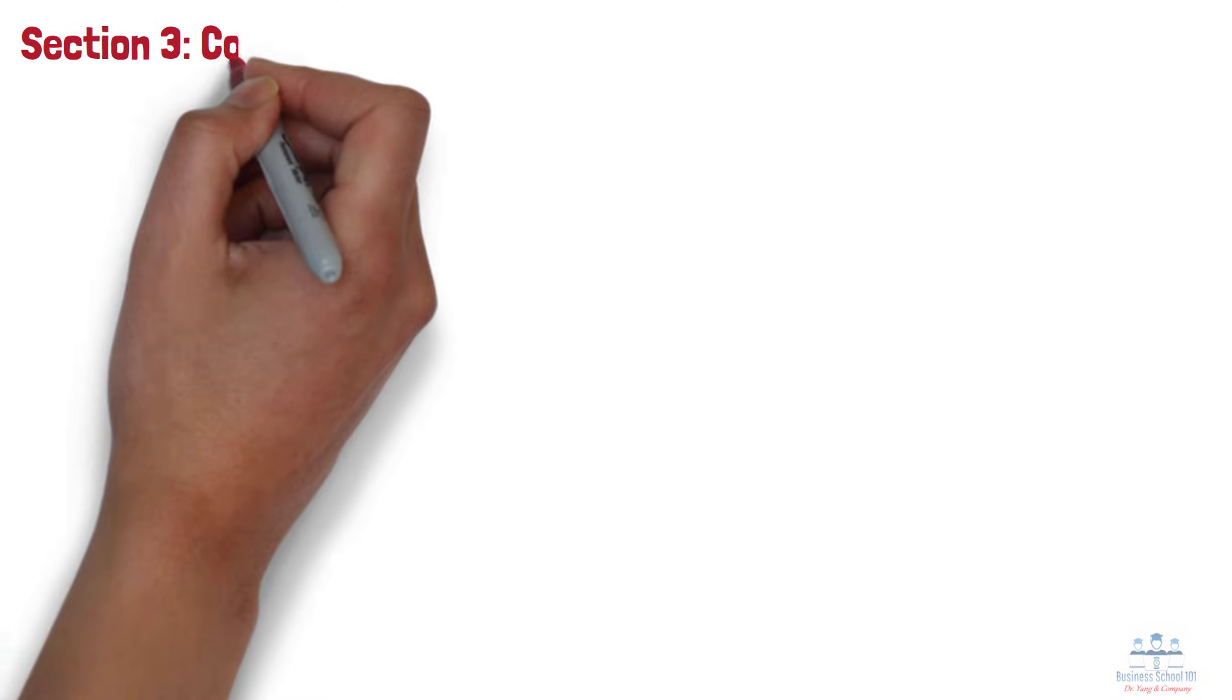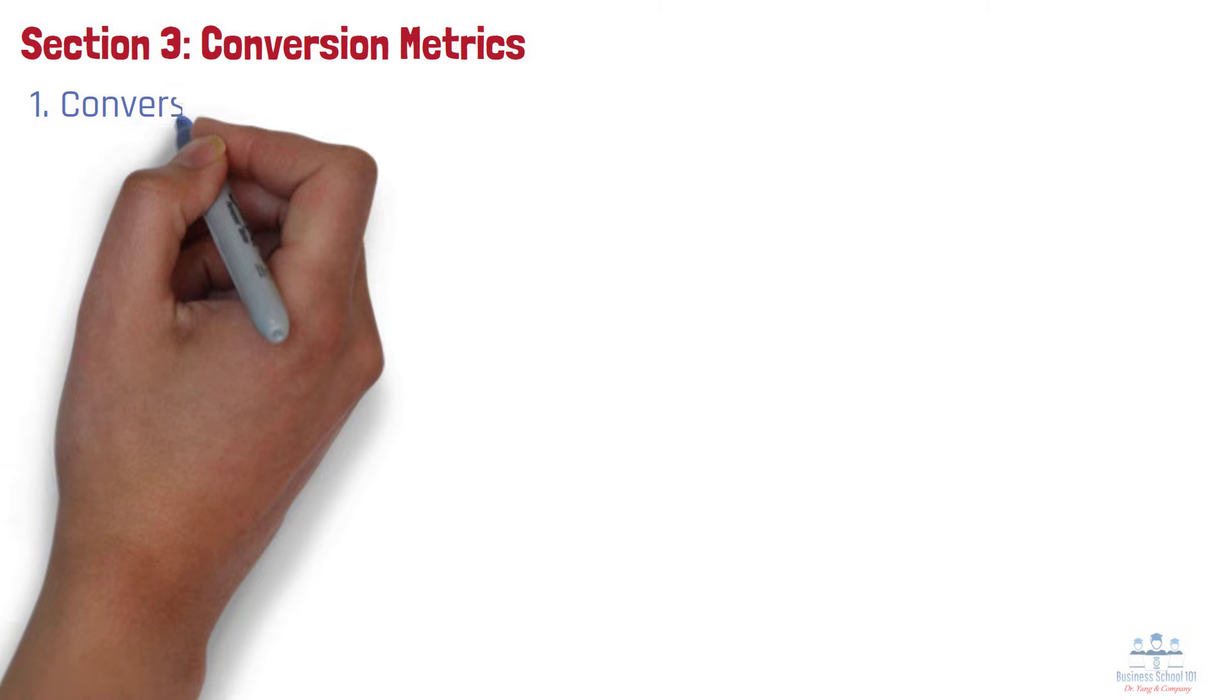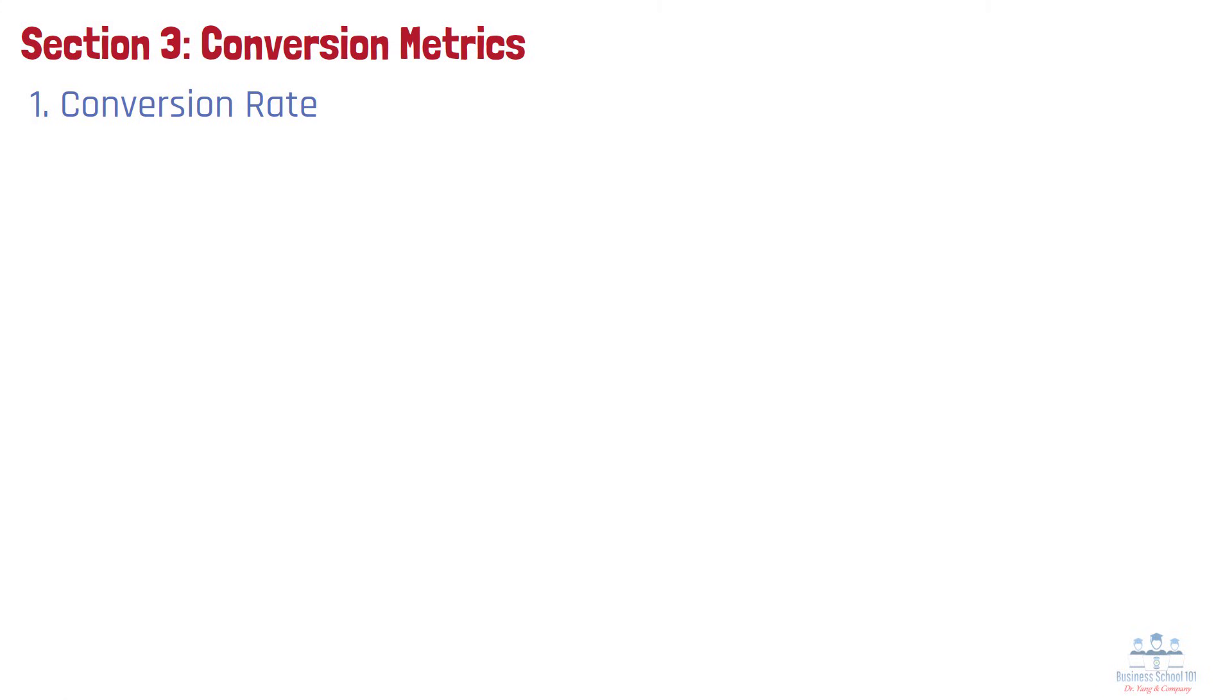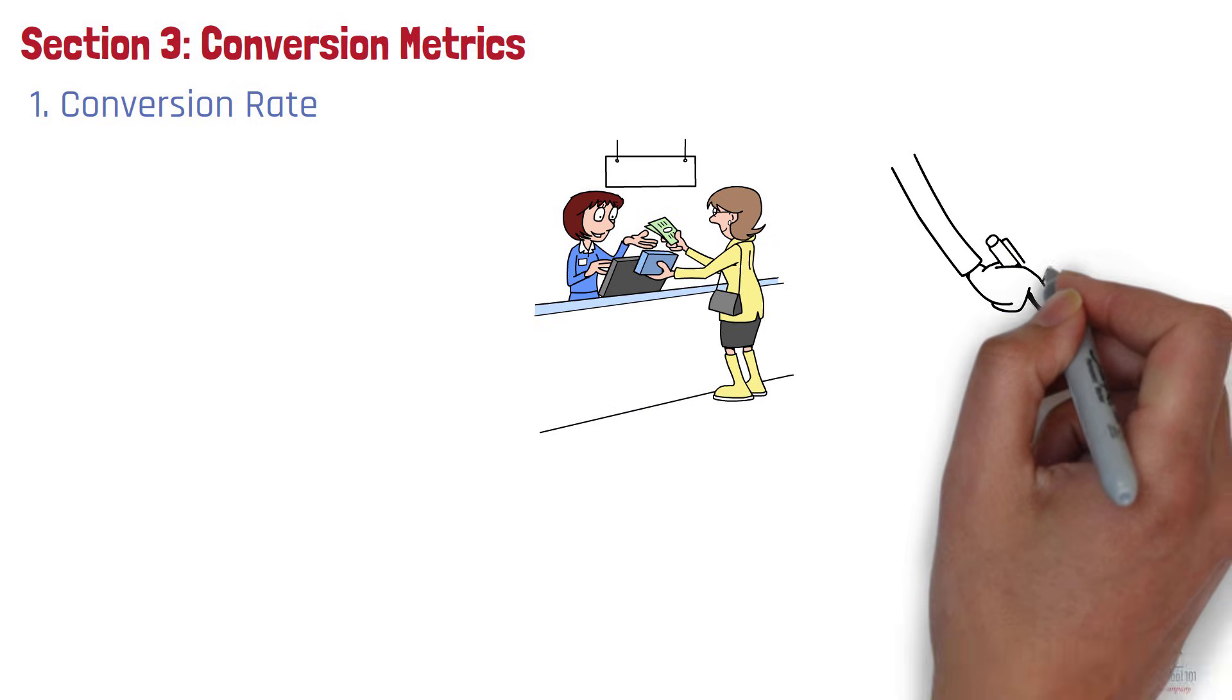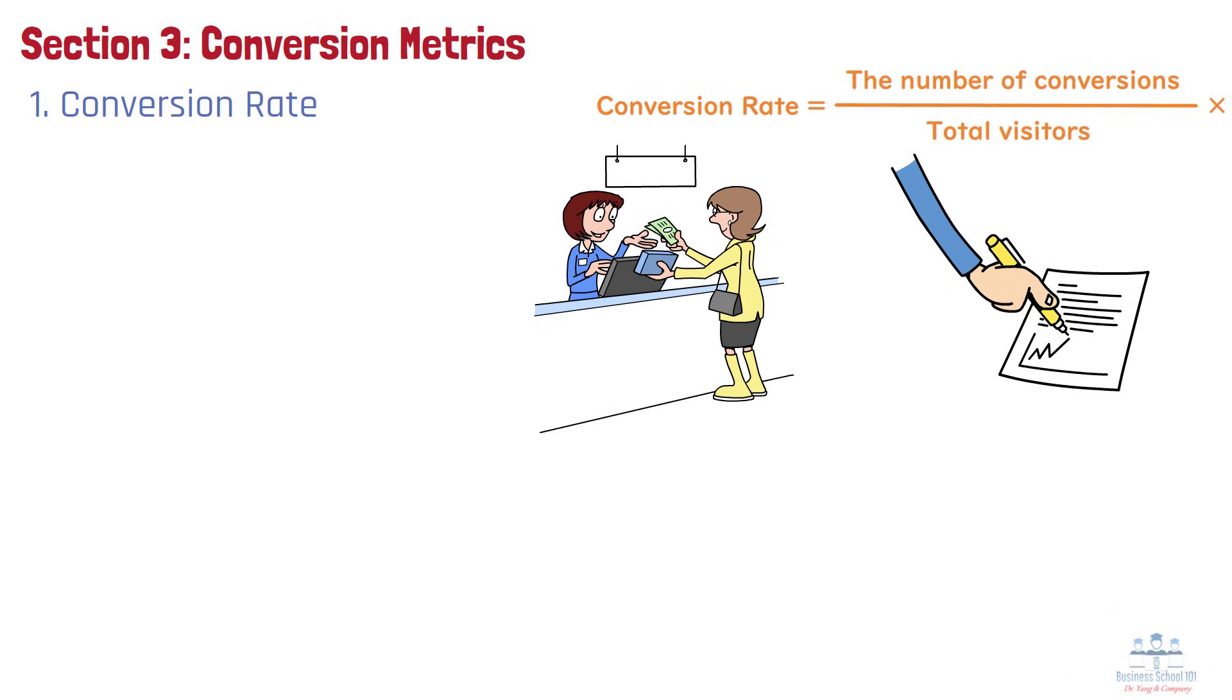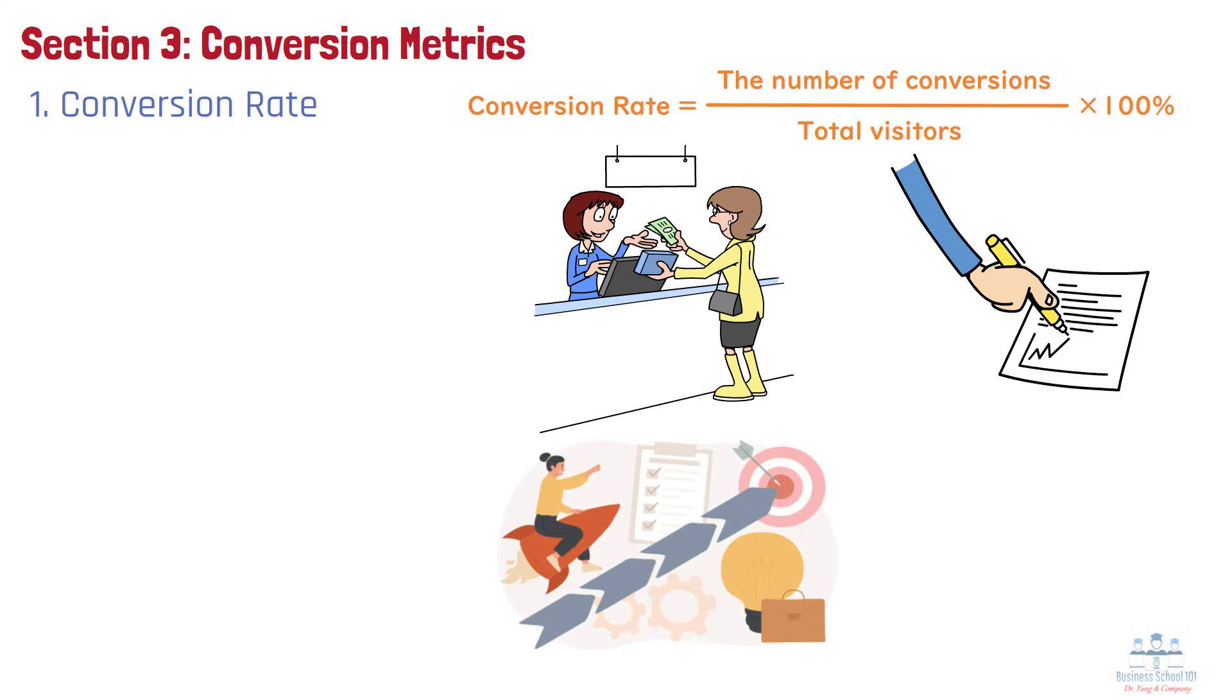Section 3. Conversion Metrics. Number 1. Conversion Rate. Conversion rate is the percentage of visitors who take a desired action, such as making a purchase or filling out a form. It's calculated by dividing the number of conversions by total visitors and multiplying by 100. High conversion rates mean your website or campaign is effectively guiding users toward your goal. Low rates indicate a disconnect that needs fixing.